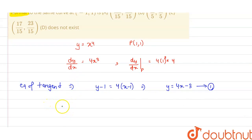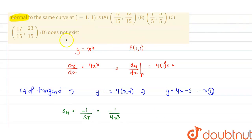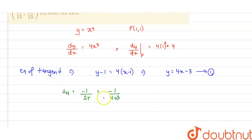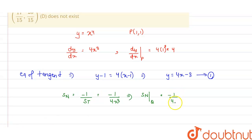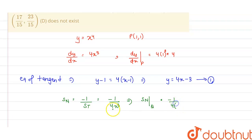Now the slope of the normal is −1 divided by the slope of the tangent. The slope of the tangent is 4x³, so the slope of the normal is −1/(4x³). At point Q, which is (−1, 1), the slope of the normal will be −1/(4 × (−1)³) = 1/4.